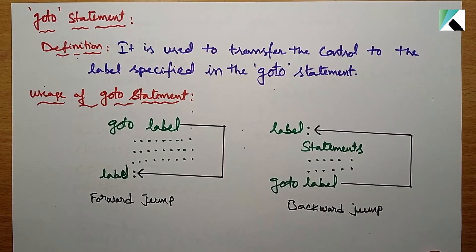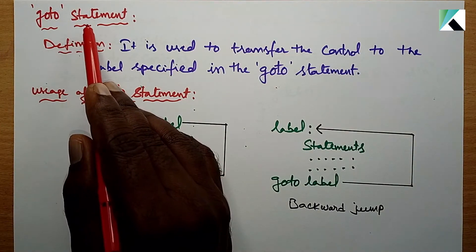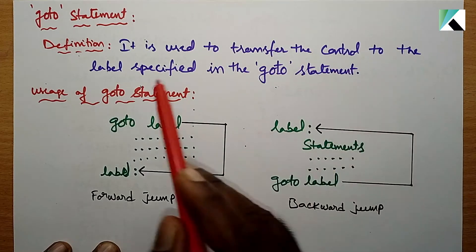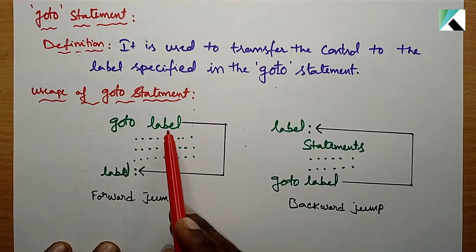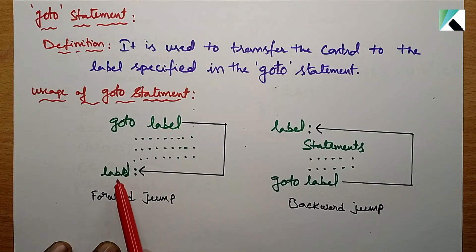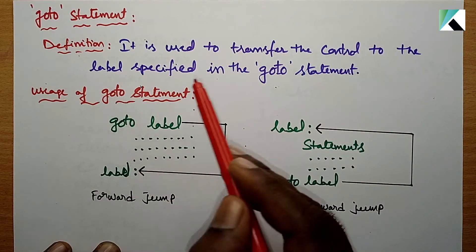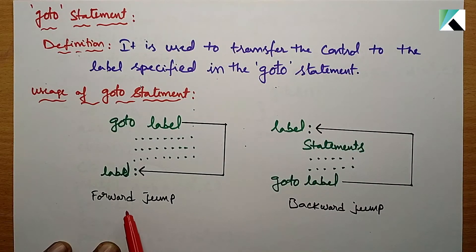Hi everyone. So, unconditional branching statements — the last one is the goto statement. It is used to transfer the control to the label specified in the goto statement. When the goto statement is encountered, the control transfers to the specified label and execution continues from there.